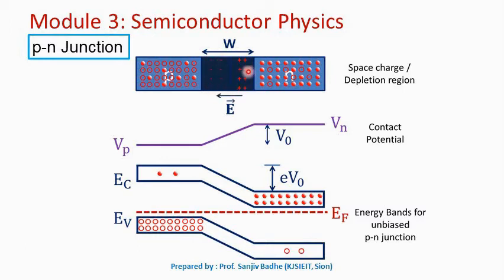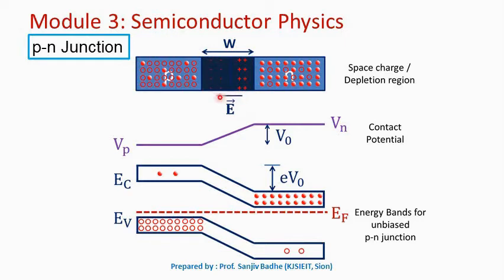This process of diffusion will continue until equilibrium is reached. At equilibrium, the negative charge will not allow further diffusion of electrons from the N side, and the positive charge will not allow further diffusion of holes from the P side. The positive charge near the junction on the N side and the negative charge near the junction on the P side give rise to an internal electric field, which opposes further diffusion of carriers from N to P and P to N.